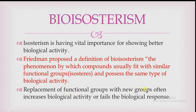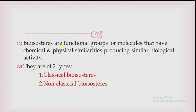Replacement of functional groups with new groups often increases biological activity or alters the biological response. If already present functional groups are not showing better biological activity, we replace them with new groups. After replacing, it may increase the biological activity, decrease it, or show inactivity. Bioisosteres are functional groups or molecules that have chemical and physical similarities producing similar biological activity. Bioisosteres are of two types: classical bioisosteres and non-classical bioisosteres, which we will see in detail in the next slide.